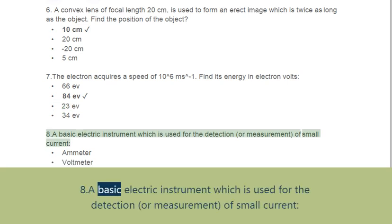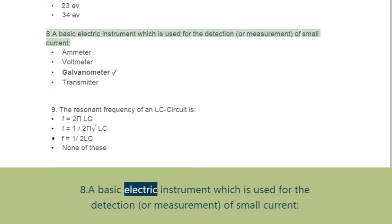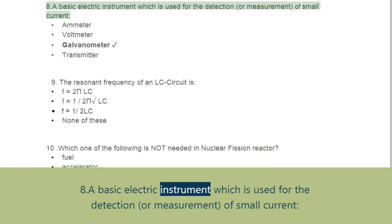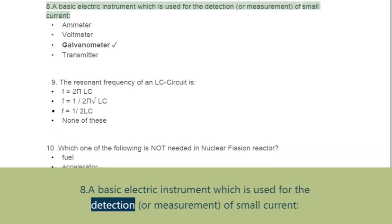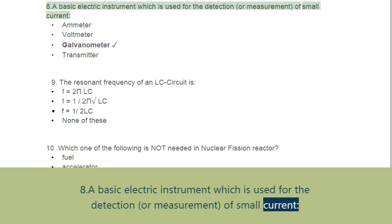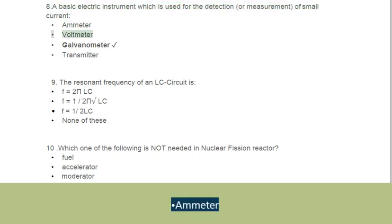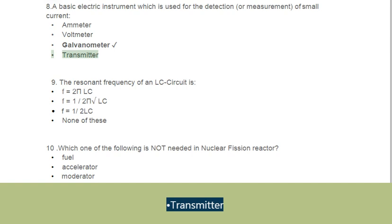Question 8: A basic electric instrument which is used for the detection or measurement of small current. Options: A. Ammeter, B. Voltmeter, C. Galvanometer, D. Transmitter.